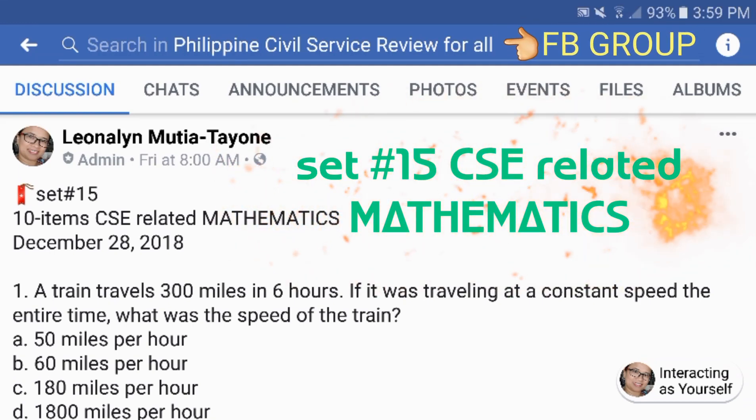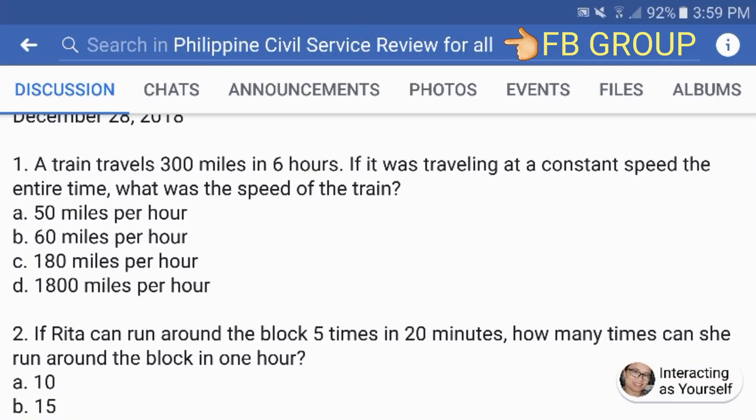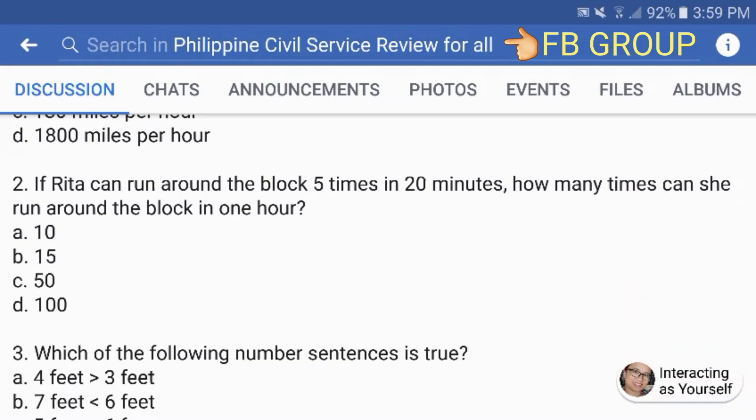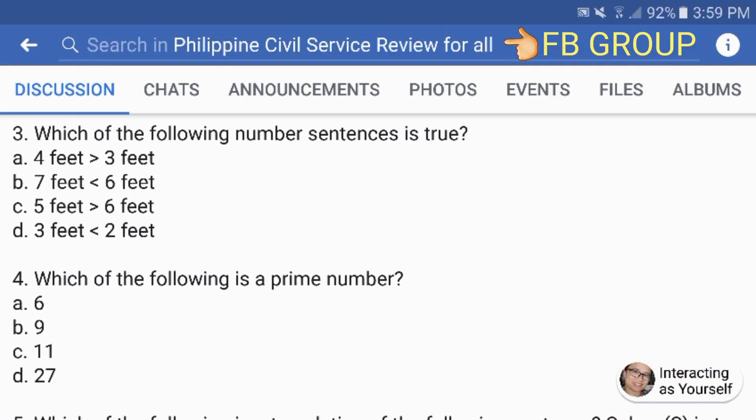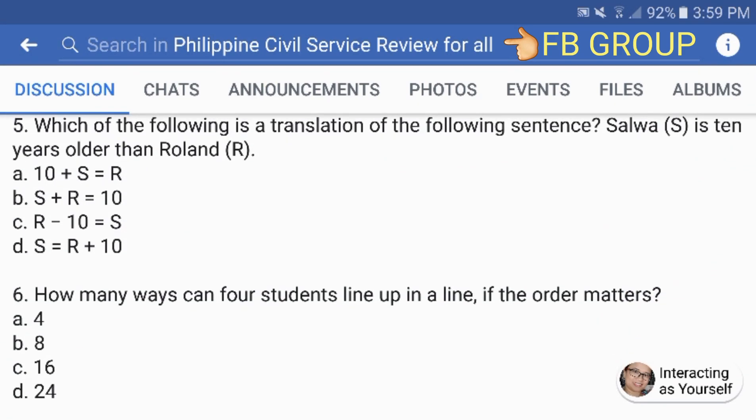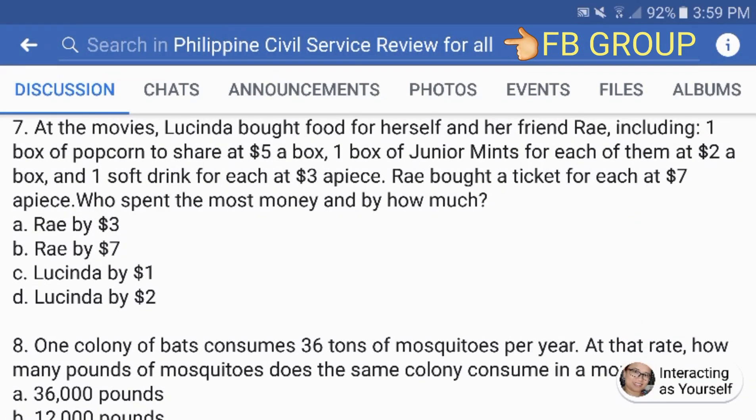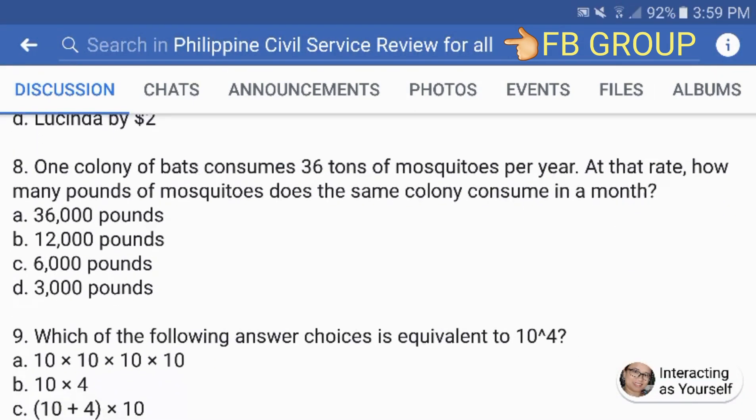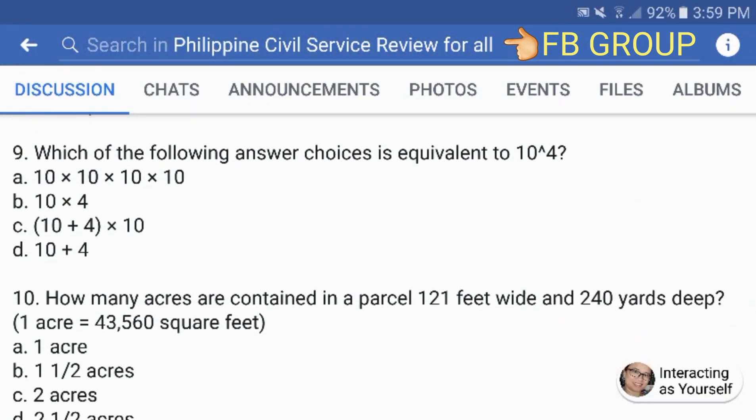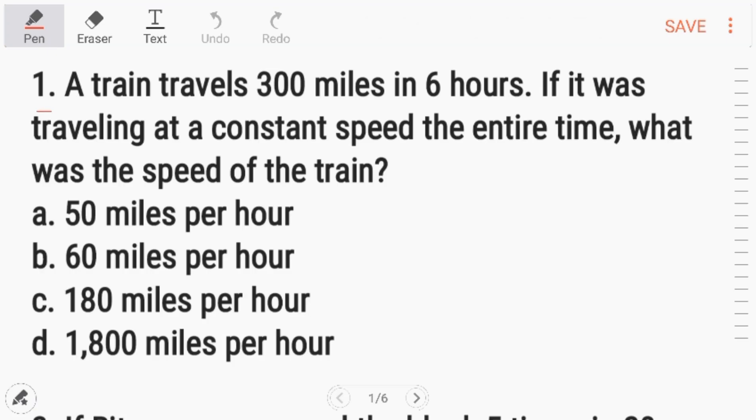Set Number 15 for our Civil Service Exam-Related Mathematics. Number 1: A train travels 300 miles in 6 hours. If it was traveling at a constant speed the entire time, what was the speed of the train?